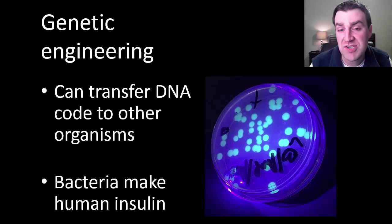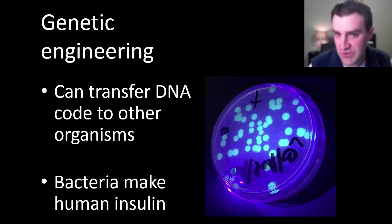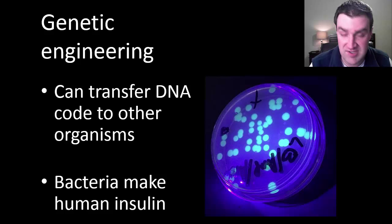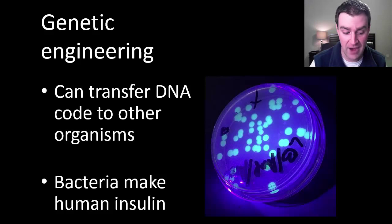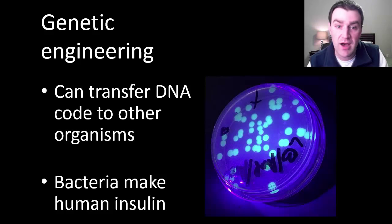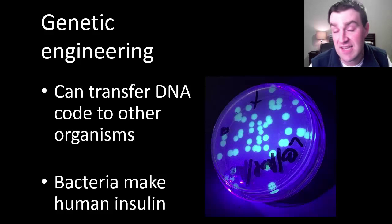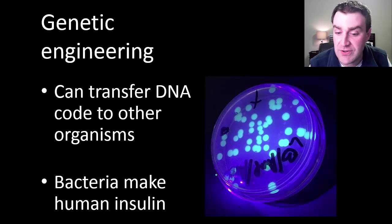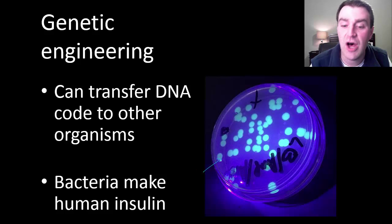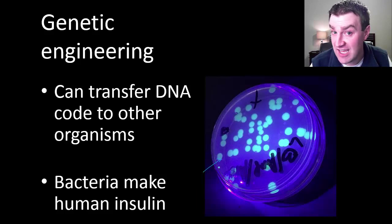Why are we so interested in this process of translation? Because that translation table really is a universal translation table — it's the same way the code is read by all living organisms. That's exciting to biologists because it makes it possible to take DNA code out of some organisms, put it into other organisms, and get them to make proteins they've never made before and therefore possess traits they've never had before. For example, we made bacteria glow with a jellyfish gene — because they know how to read the jellyfish DNA code, it's the same code, they acquire that trait.